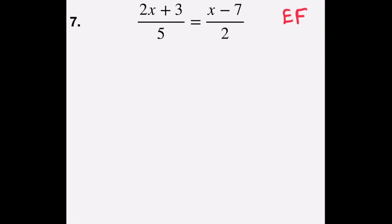Step one is to eliminate fractions. There are fractions in this problem. I have a denominator of 5 and a denominator of 2. To eliminate fractions, I'm going to multiply both sides by the least common denominator of 5 and 2, which is 10.